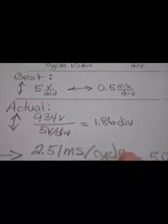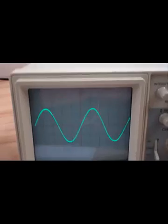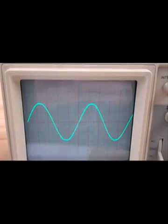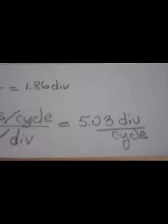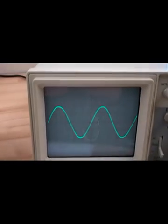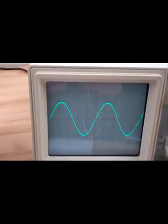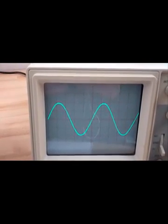Now, after making the adjustments, we expect to see the amplitude of 1.86 divisions. There it is, 1.86 divisions for the amplitude. And we also expect to see 5.03 divisions horizontally for one cycle. And there it is, 5 point plus divisions for one cycle.